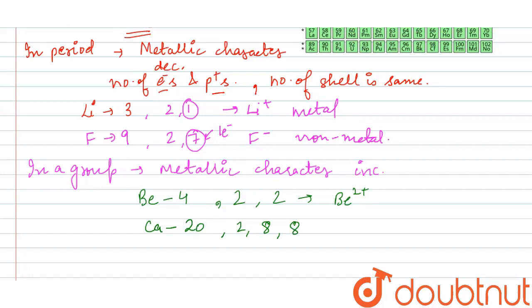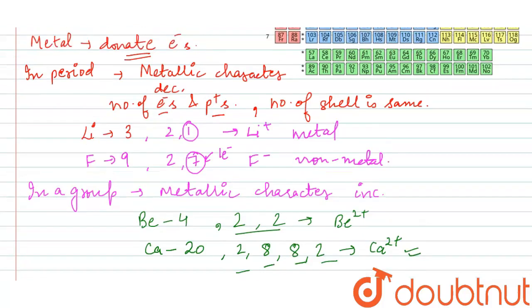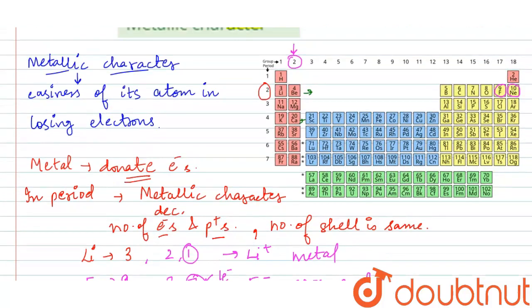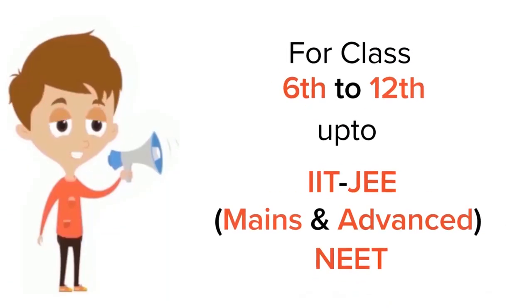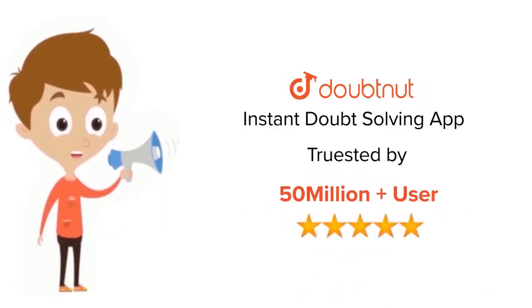Calcium has configuration 2,8,8,2, giving it four shells compared to beryllium's two. The outermost electron in calcium is very far from the nucleus, so it loses electrons readily and is more metallic than beryllium. In conclusion, down the group metallic character increases, and across the period metallic character decreases.